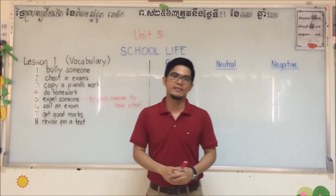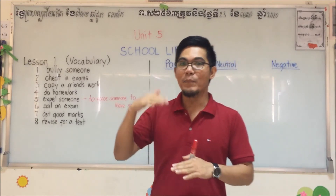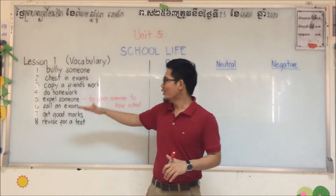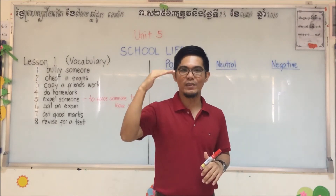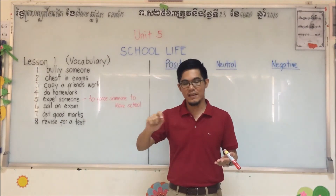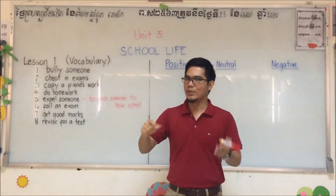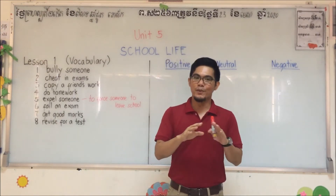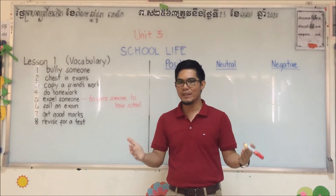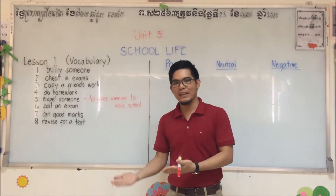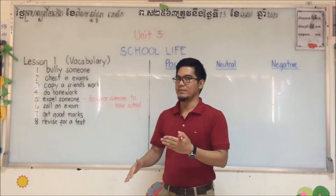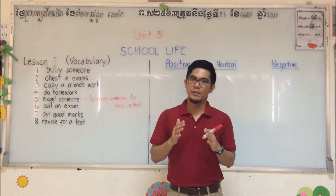Number seven: get good marks. That's our aim — to get good marks. Beyond 50, not just 60 or 70, but good marks — it could be 80, 90, or even 100. And last, number eight: revise for a test. After you finish a test, don't submit yet. You have to do revisions — review your answers for each number so you won't miss any blank. If you have enough time, you can change or add to your answers, or move on if all your answers are correct.